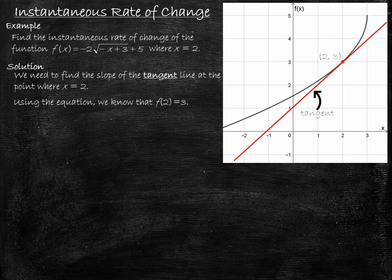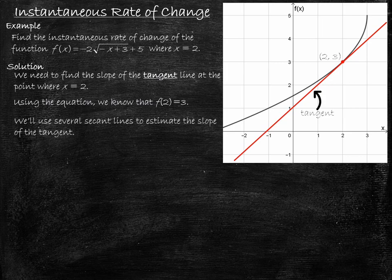We need to find the slope of this tangent line, and the way we'll do it is to use several secant lines — lines that go through two points on our graph. One of those points will be our point of tangency, (2, 3). Using several secant lines, we'll be able to estimate the slope of this tangent.